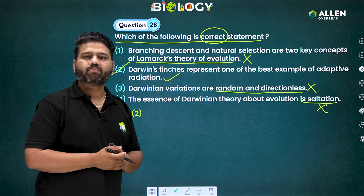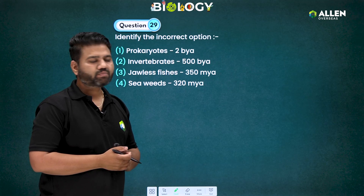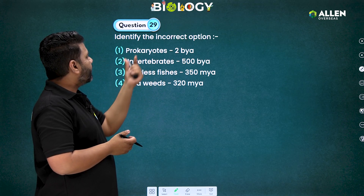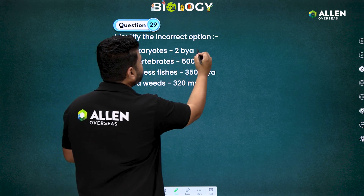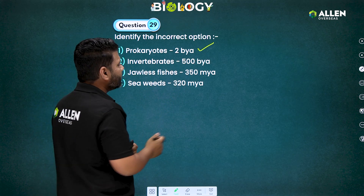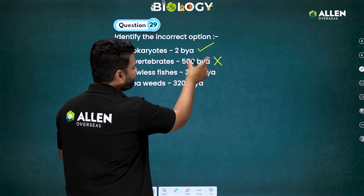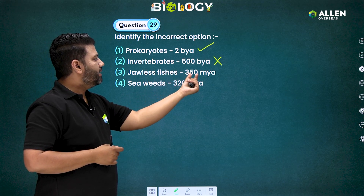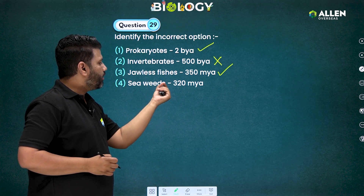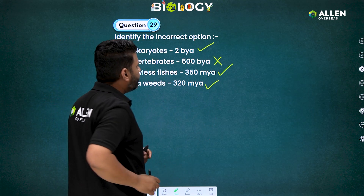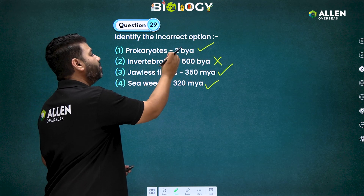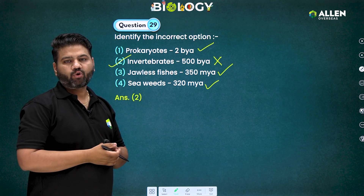Question number 29: identify the incorrect option. Prokaryotes 2 billion years ago — this is correct. Invertebrates 500 billion years ago — this is incorrect; it should be 500 million years ago. Jawless fishes 350 million years ago — correct, directly from NCERT. Origin of seaweeds 320 million years ago — also correct. The incorrect option is the second one: invertebrates 500 billion years ago. The answer to question 29 is option number two.